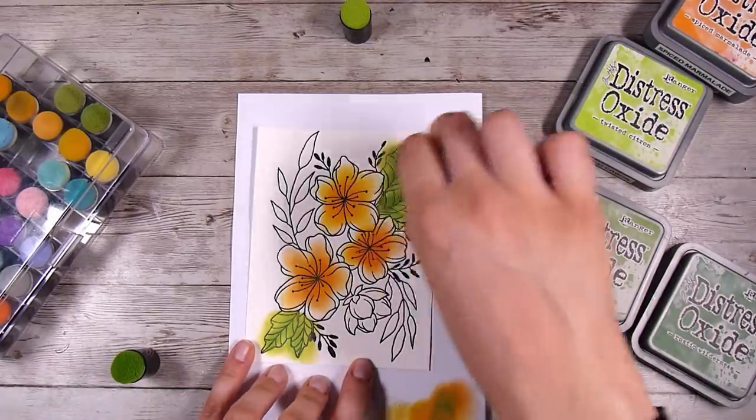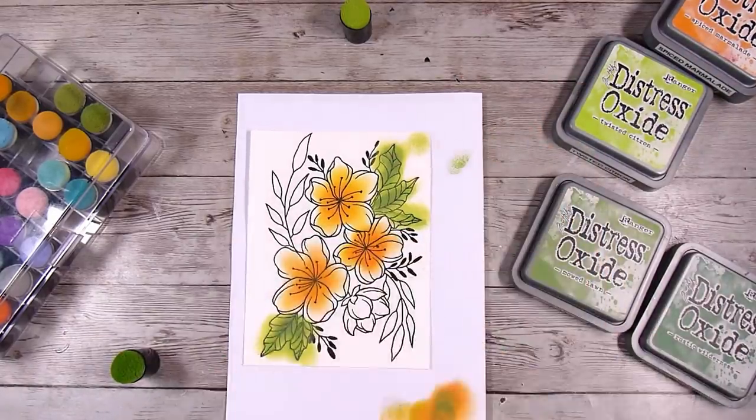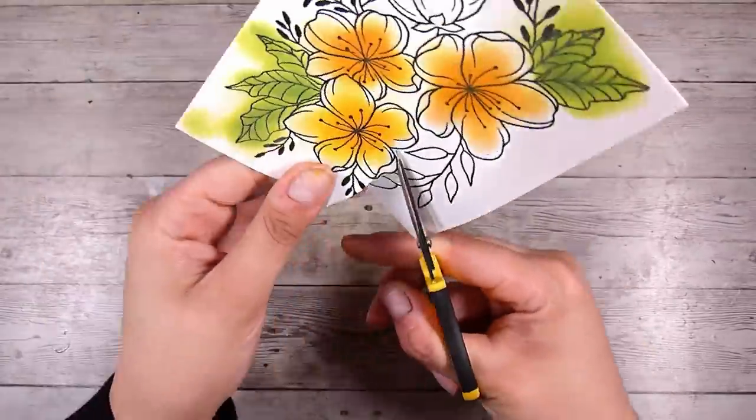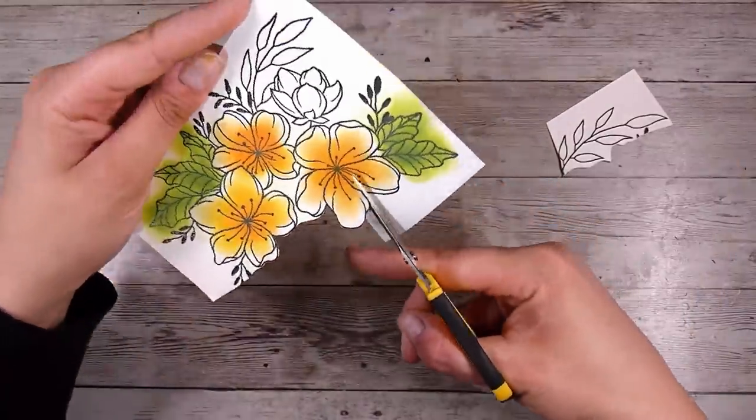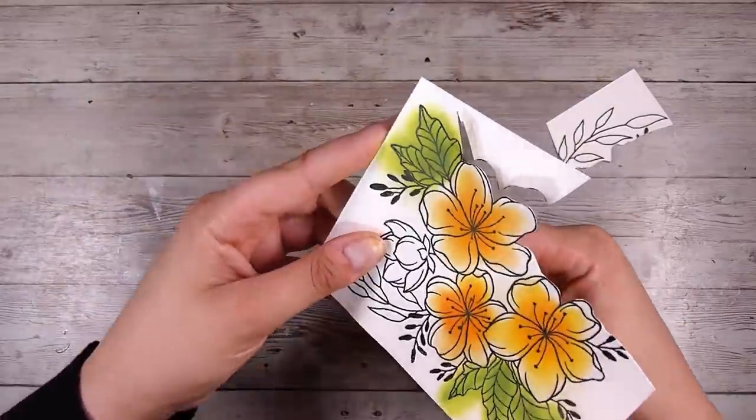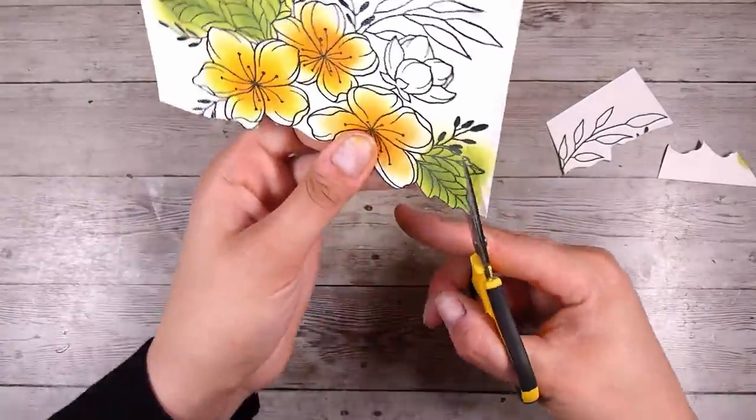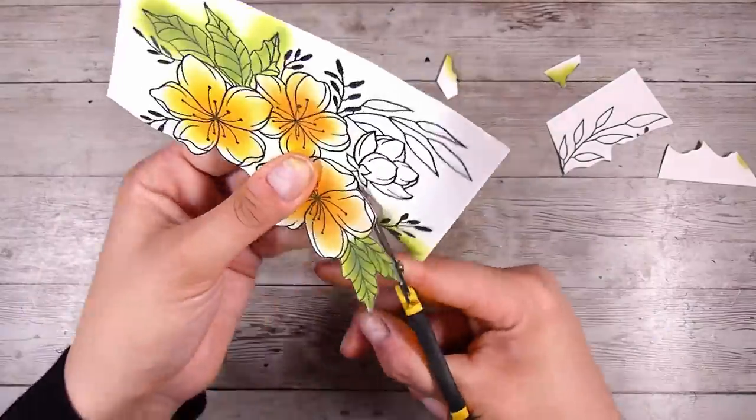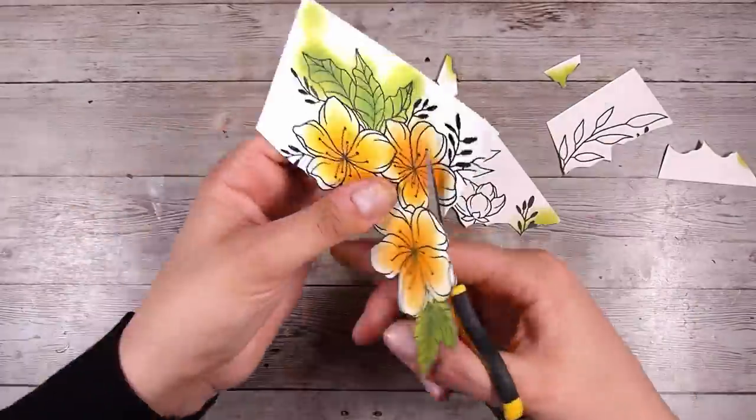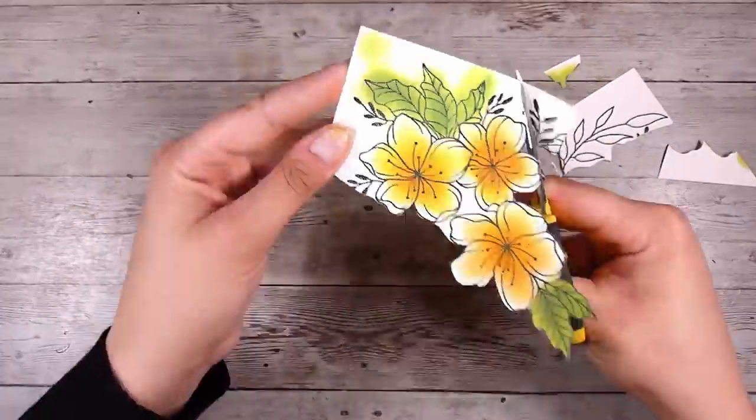Now I probably should have done some masking here, but honestly using the finger daubers is one of the main reasons that I actually use these, is so that I can get into all those little places without having to mask. Because if I can find a quicker way or an easier way to do things I will generally do it.